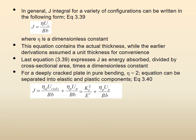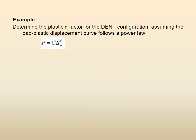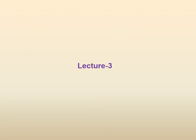I have taken a lot of time today just revising this for you, so that you are mentally in the same state. After doing all of this, we gave you an example: determine the plastic eta factor for the DENT double edge notched tension configuration, assuming that the load plastic displacement curve is given like this: P = C times Delta_P raised to N. Delta_P is the plastic part of delta raised to N. We discussed quickly its solution.